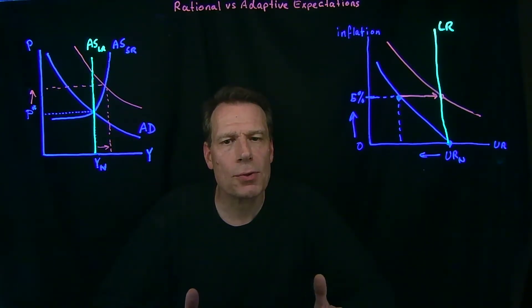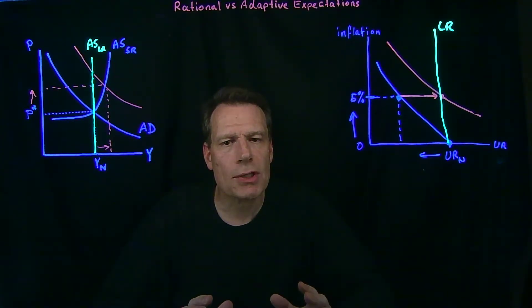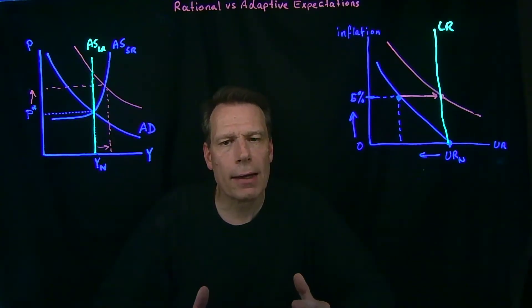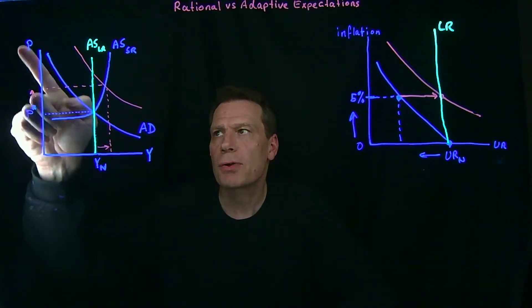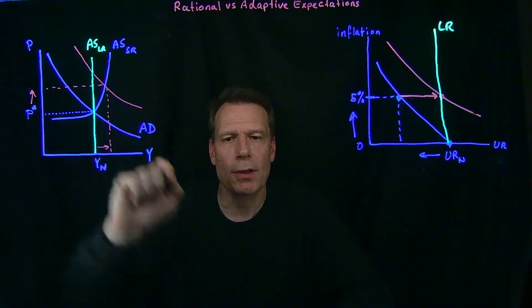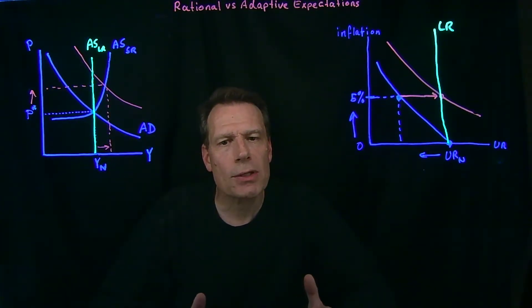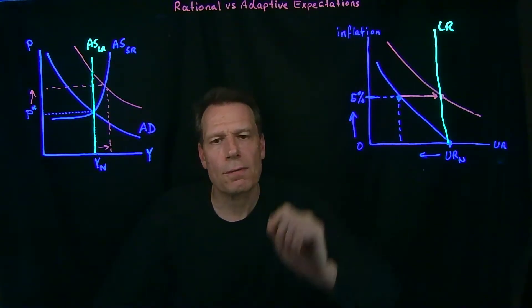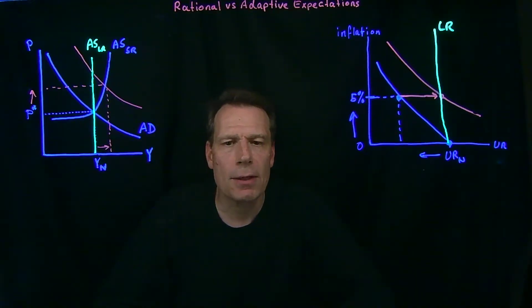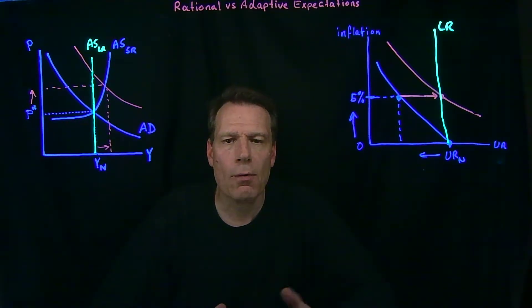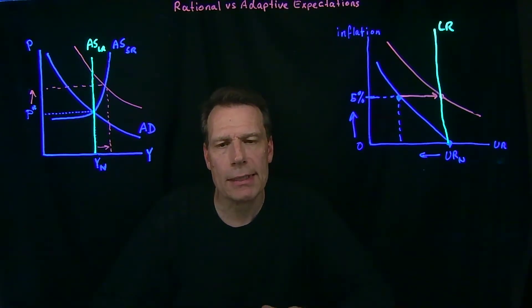As we've developed these two graphs, you might have noticed a slight inconsistency between them. In our aggregate demand and aggregate supply graph, we're measuring the price level on the vertical axis, whereas in our Phillips curve graph, we're measuring inflation on the vertical axis, where inflation is the change in the price level rather than the price level itself.